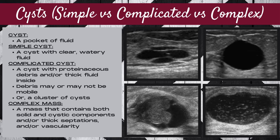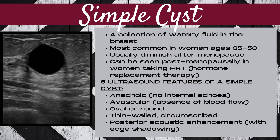A complex mass is a mass that contains both solid and cystic components and/or has thick septations and/or internal vascularity. A simple cyst is a collection of watery fluid in the breast. These are most common in women ages 35 to 50. Usually, cysts diminish after menopause. However, they can be seen post-menopausally in women taking HRT, which is hormone replacement therapy. Cysts are hormonally driven masses in the breast.